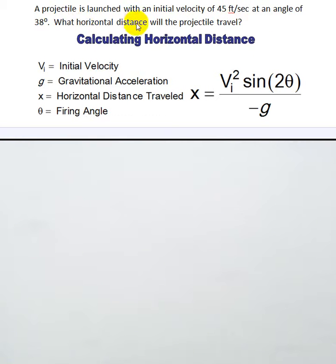What horizontal distance will the projectile travel? Here's the formula from our PowerPoint that shows horizontal distance can be found by the initial velocity squared times the sine of 2 theta, all divided by negative g.